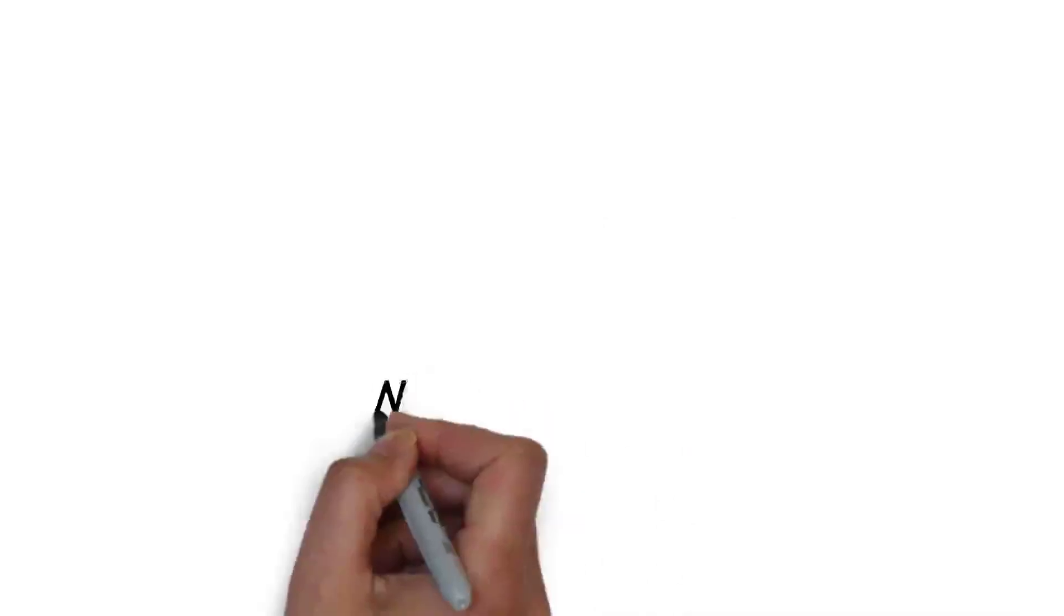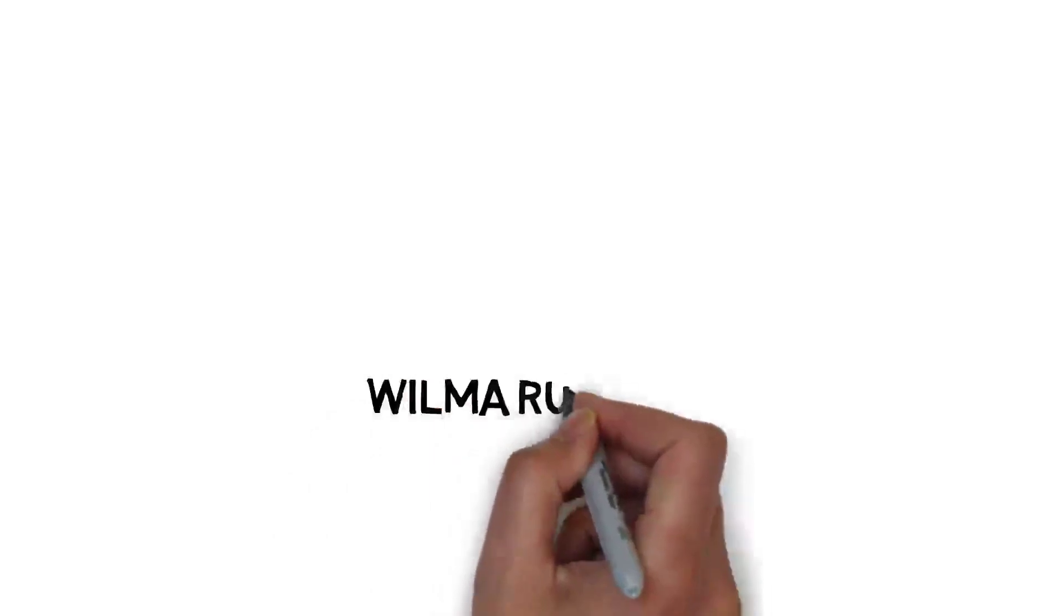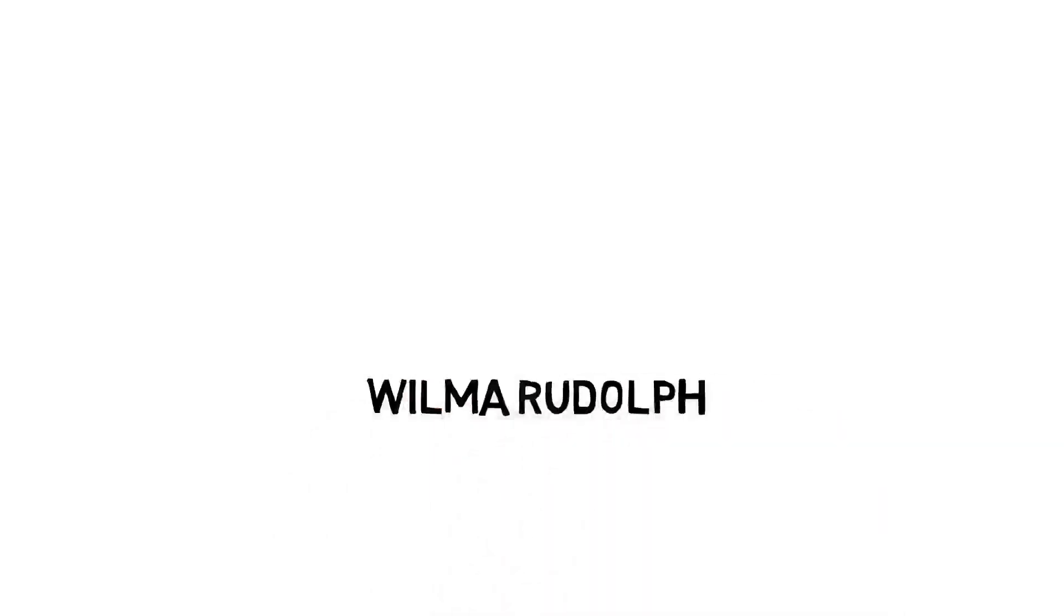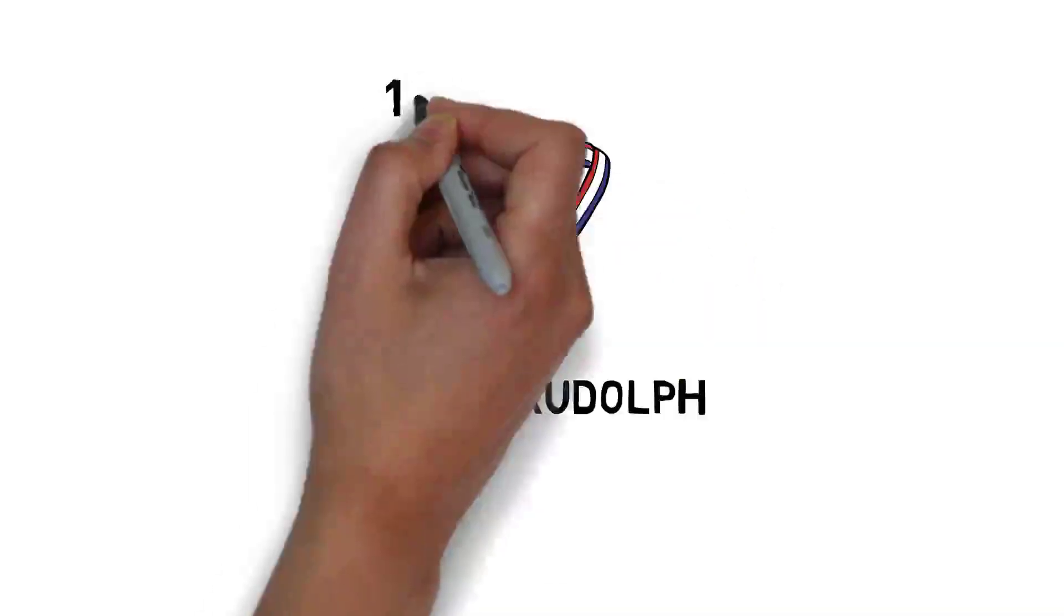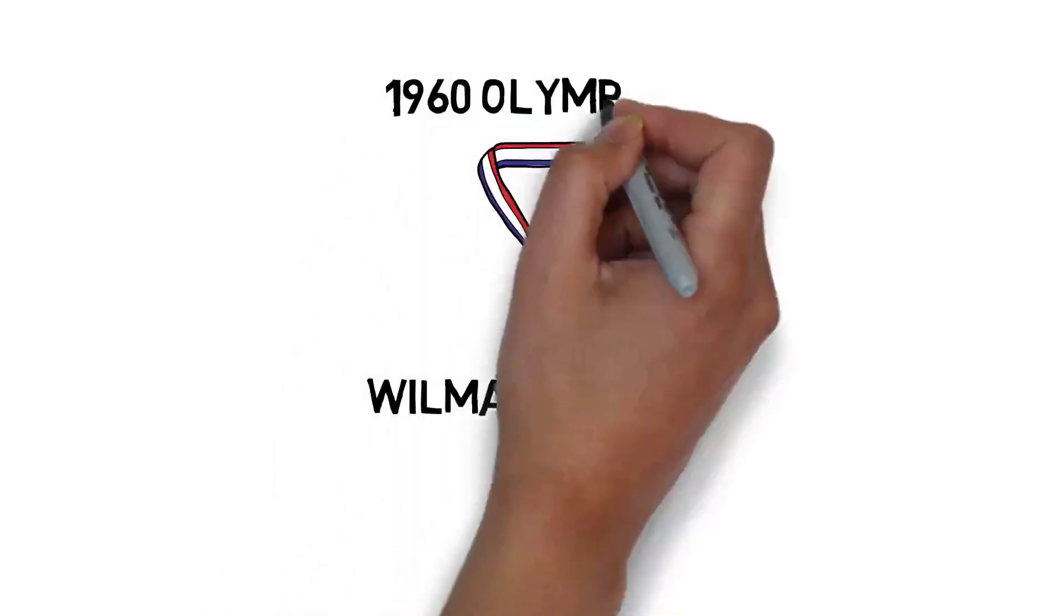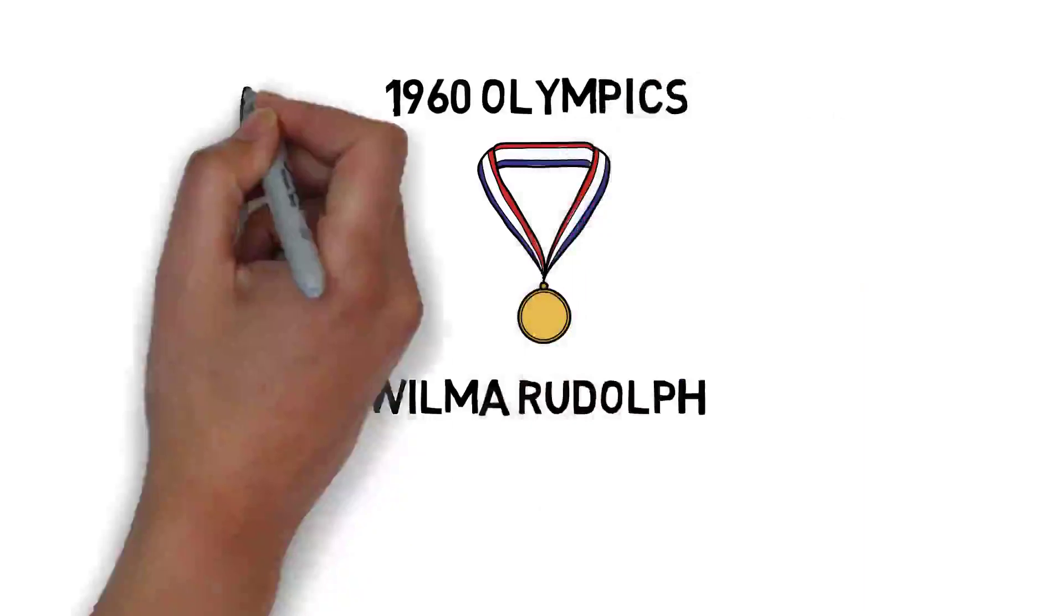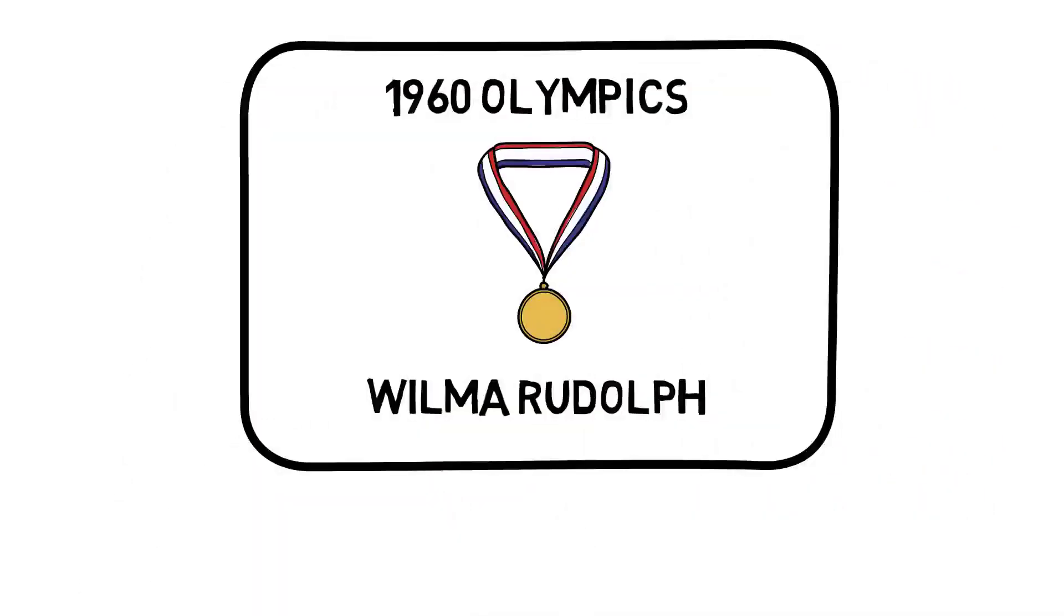Wilma Rudolph, a woman who won three gold medals in the 1960 Olympics, was born premature. She was the 20th child out of 22 brothers. Her left leg got paralyzed, and only after extreme commitment during her physiotherapy could she walk normally again. At age 12, when she decided to start running, she faced other challenges.